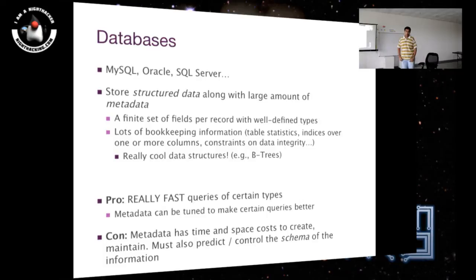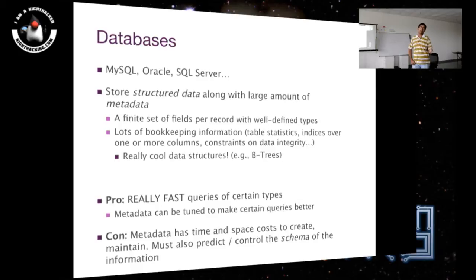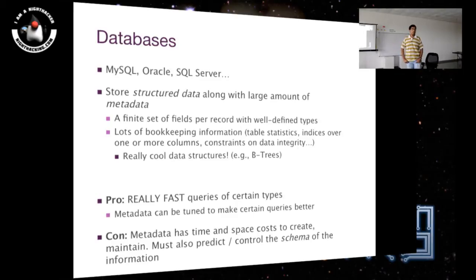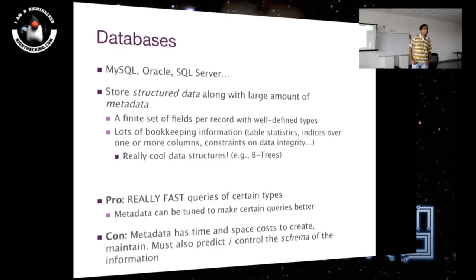Some context: before big data, we've had databases for decades, and they've been doing a good job — especially relational databases like Oracle and MySQL. Why move from databases into big data? Databases are structured data stores where you define columns and data is in the form of rows. They're optimized for certain operations: adding, inserting rows, updating data values already present. These are things that databases excel in.